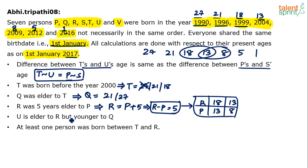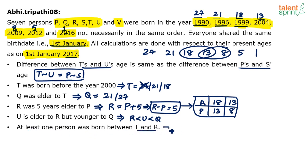Clue 5: U is elder to R but younger to Q, meaning R < U < Q. And Clue 6: at least one person was born between T and R, so there is at least one age value strictly between T and R.